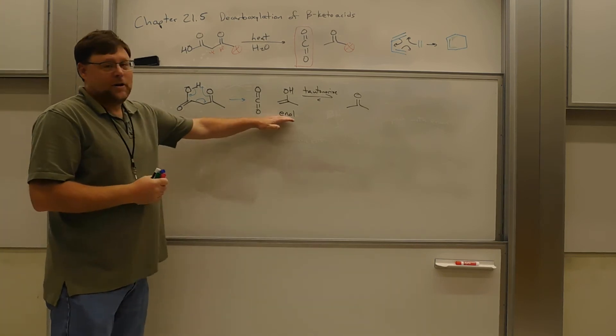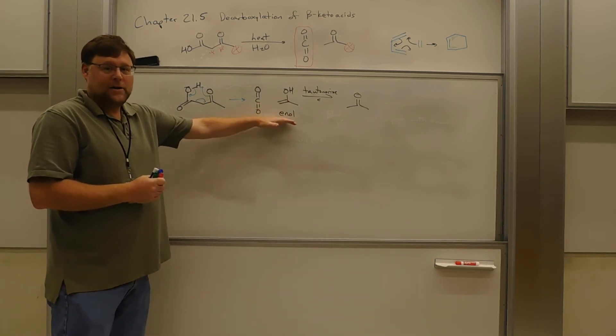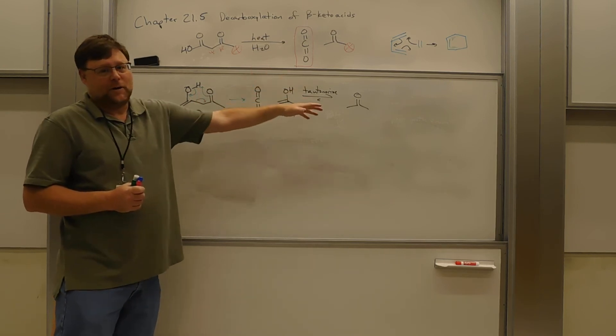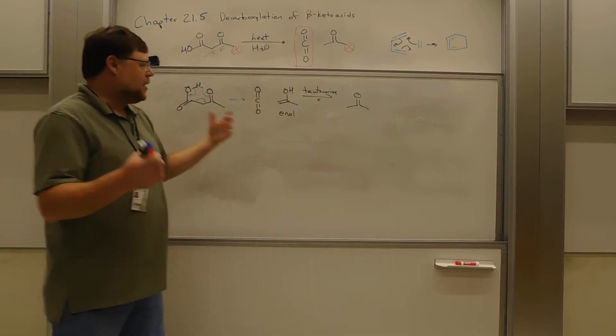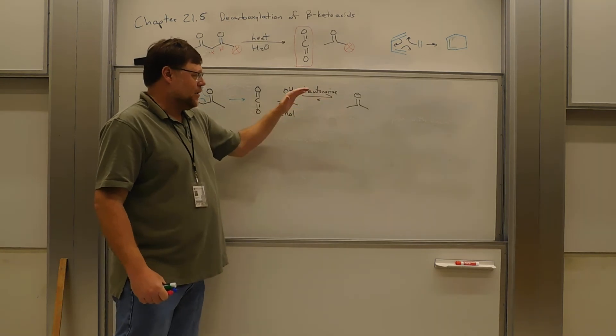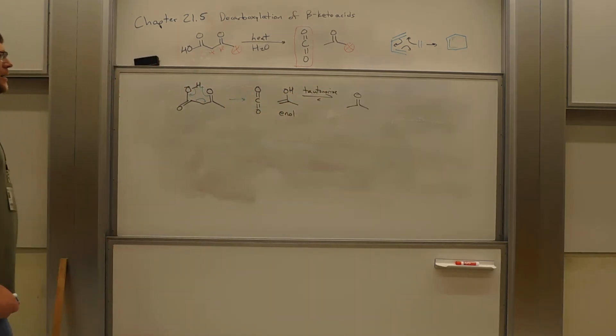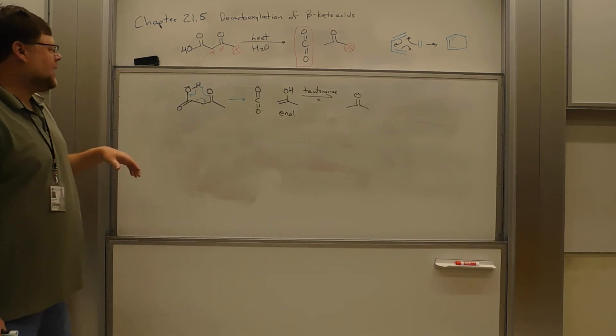We've done this. If you go back to one of the earlier videos, 21.1, for enols. I show a base and acid catalyzed mechanism to go from the enol to the carbonyl compound. And under most circumstances, that equilibrium constant here is like 10 to the 12th, 10 to the 13th, something like that. But this is all this reaction is. Decarboxylation of a beta-keto acid.